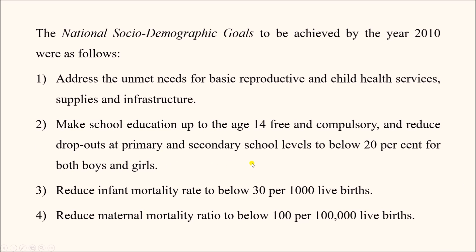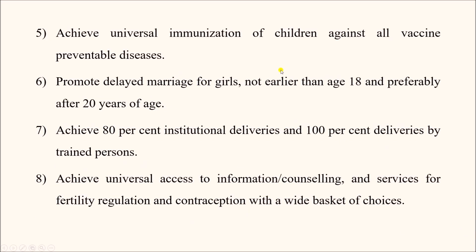Further goals include reducing dropouts at primary and secondary school levels below 20 percent for both boys and girls; reducing the Infant Mortality Rate below 30 per 1,000 live births; reducing the Maternal Mortality Ratio below 100 per 1 lakh live births; achieving universal immunization of children against all vaccine-preventable diseases as per the national immunization schedule; and promoting delayed marriage for girls — not earlier than age 18, and preferably after 20 years of age.